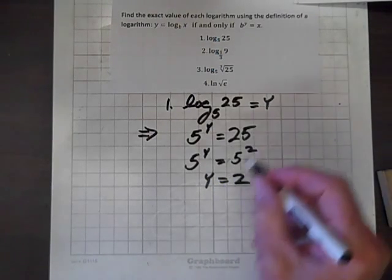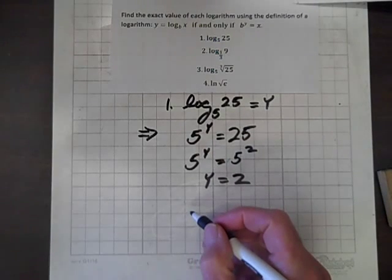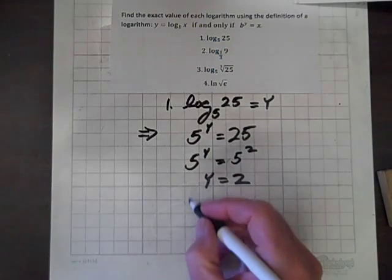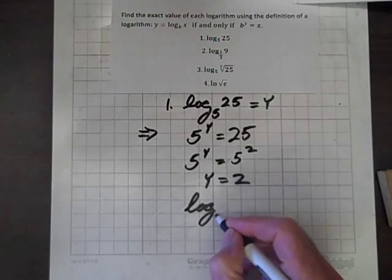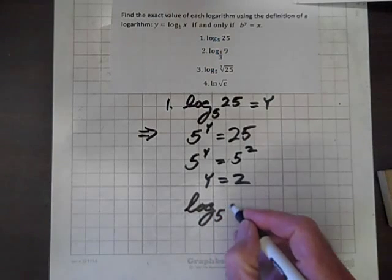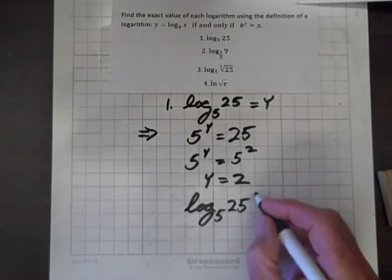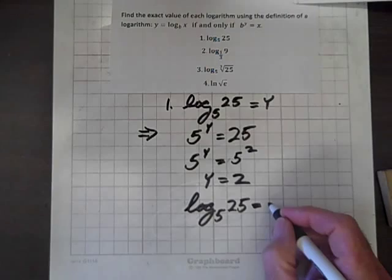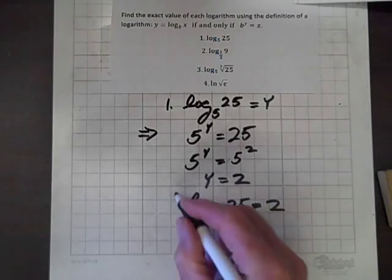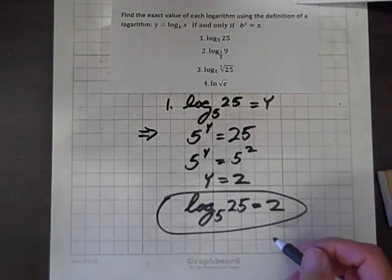But y also equals log to the base 5 of 25. So log to the base 5 of 25 equals 2, and simplified.